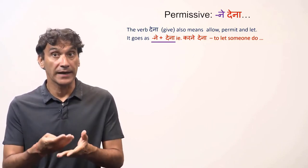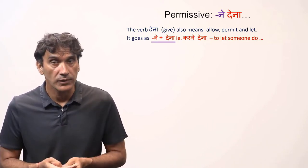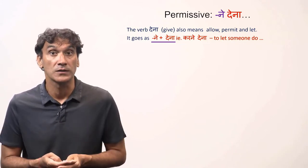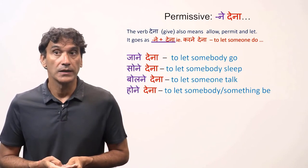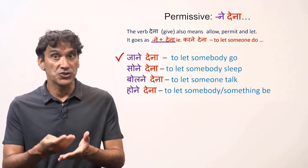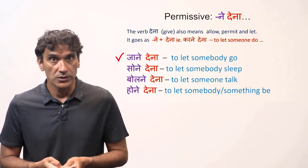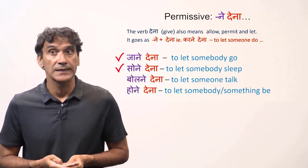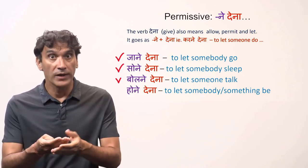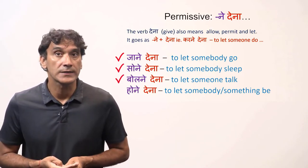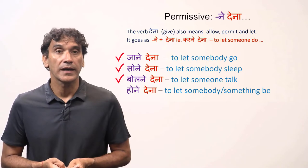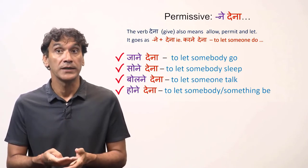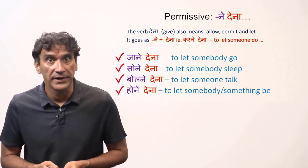For example, 'karne dena' means to let someone do or to allow someone to do. Similarly, 'jane dena' means to let somebody go, 'sonne dena' means to let somebody sleep, 'bolne dena' means to let someone talk, and 'honne dena' means to let somebody or something be.